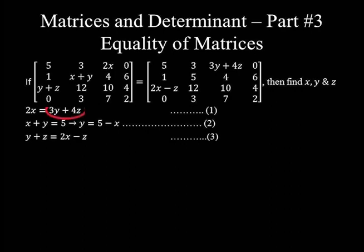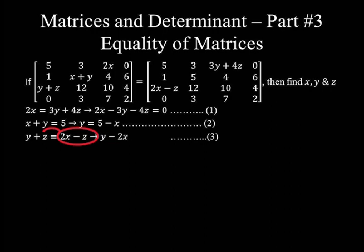Let's rewrite equations 1 and 3 in the form of addition and subtraction equal to 0. In equation 1, bringing the right-hand side to the left gives 2X minus 3Y minus 4Z equal to 0. In equation 3, bringing the right-hand side to the left gives Y minus 2X, and negative Z moved to the left becomes plus Z, so Z plus Z equals 2Z, giving Y minus 2X plus 2Z equal to 0.